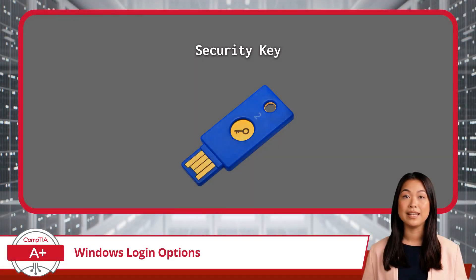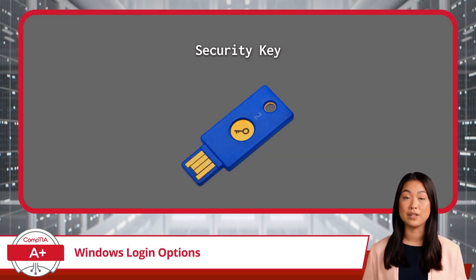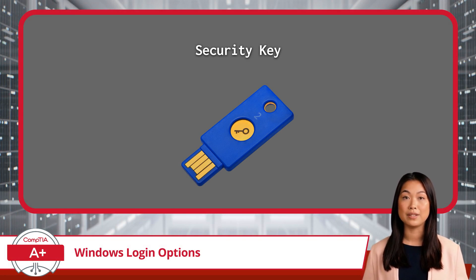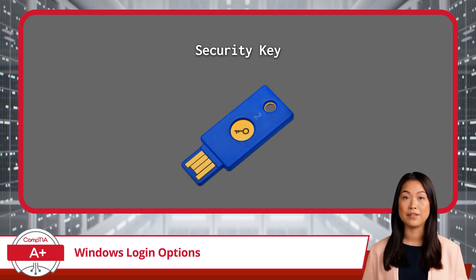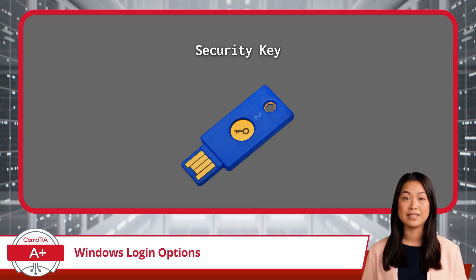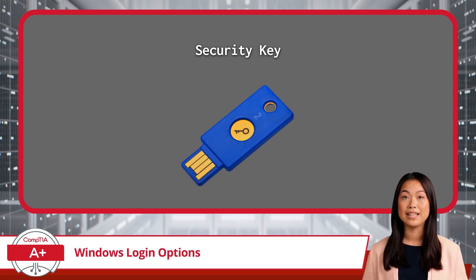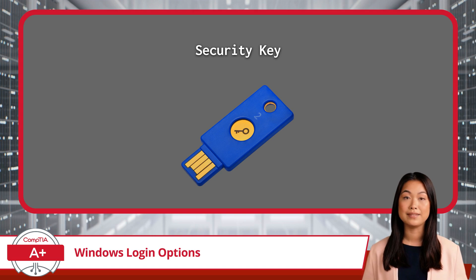A security key is a physical device that provides an additional layer of protection. When logging in, just insert the key into your device. It's an excellent option for those seeking enhanced security, as it requires both the physical key and your presence. You can set this up under Sign-in Options by selecting Security Key and following the steps to pair the key with your device.